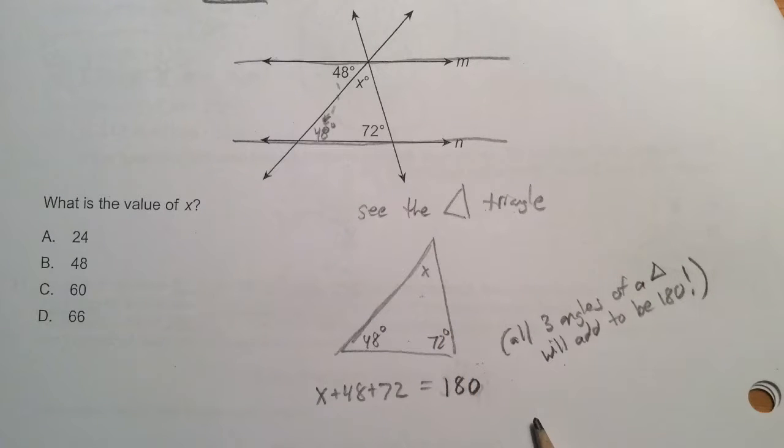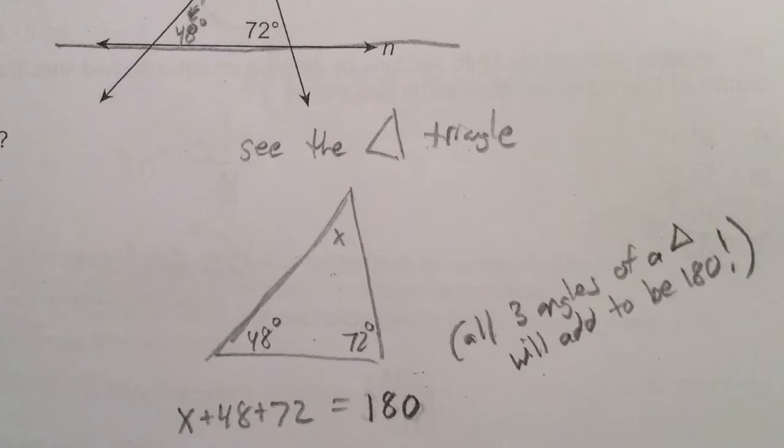So what I did next was I removed the triangle, redrew it outside of the four lines, and I put in the angle measurements. And we need to understand that all three angles of a triangle have to be 180 degrees when they're added together.